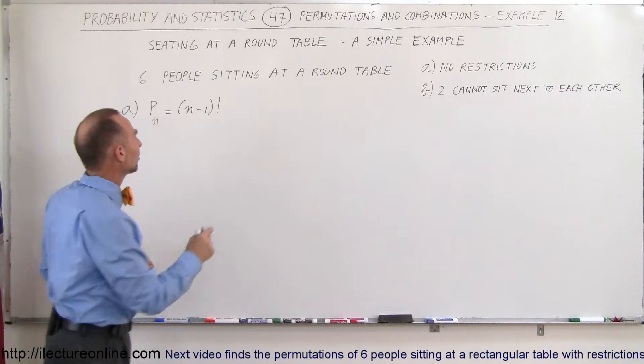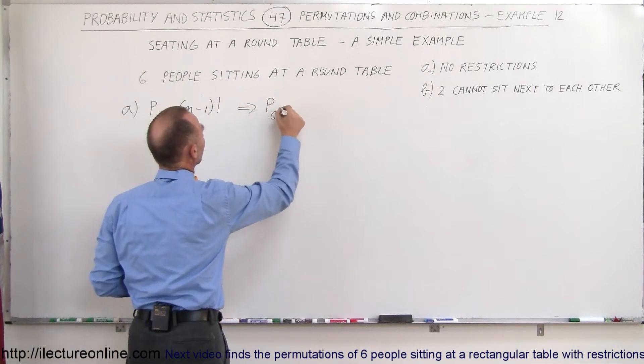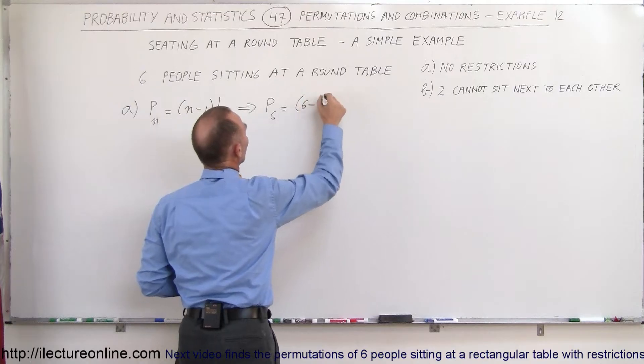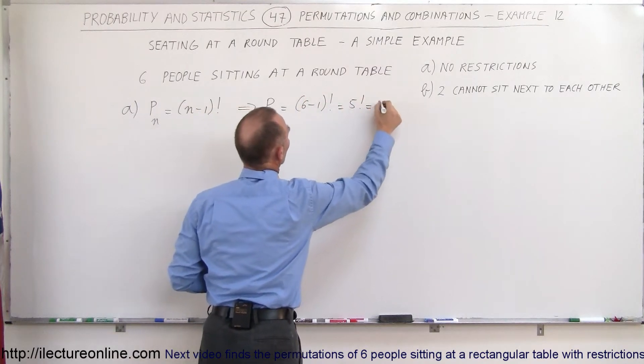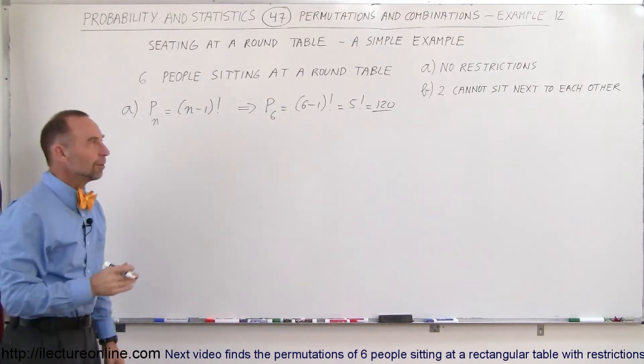In this case it's n minus one factorial, so therefore we can say that the number of permutations with six people is equal to six minus one factorial, which is five factorial, which is 120 different permutations if there's no restrictions at all.